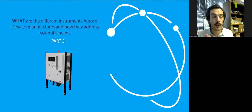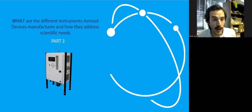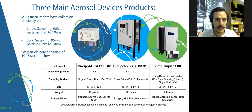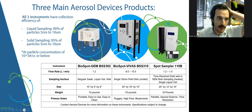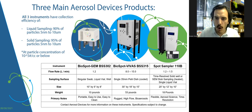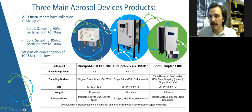On to part three: utilizing this theory and technology, the current different classes of instruments that Aerosol Devices manufactures, and examples of how they address scientific needs. As of today, June 5th, 2023, Aerosol Devices has three primary product lines that all do effectively the same thing with effectively the same collection efficiency, but differ in flow rate and sampling substrate. The first of these three instruments is the BioSpot GEM — our smallest, newest, and most price-competitive instrument. The BioSpot VIVAS and then the SPOT Sampler are more price-competitive, and the GEM is even more price-competitive from there.